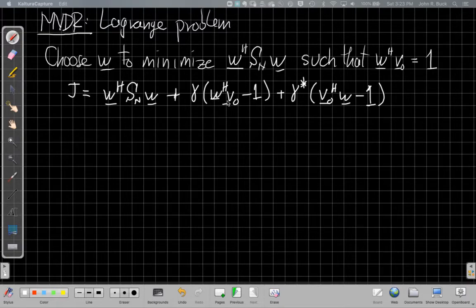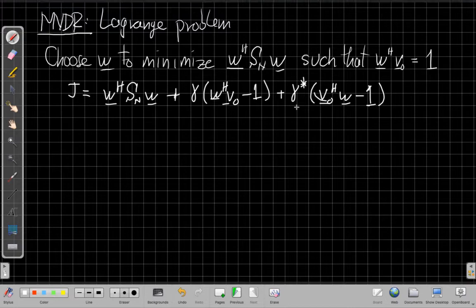So we want W Hermitian V0 to be equal to 1, so we set it up this way. And then we take the conjugate of this term, and that's like having the V0 and WH switch places, so I'm taking the conjugate transpose of V instead in this one, and the conjugate of 1 is 1.